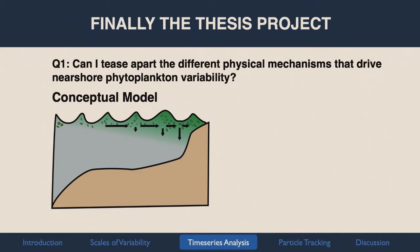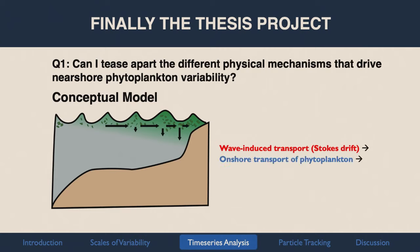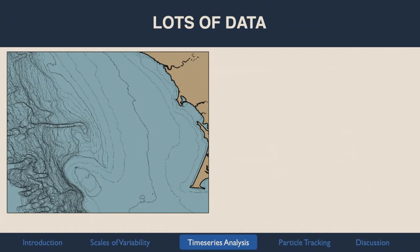Just to reorient with the conceptual model: the arrows represent onshore transport primarily from Stokes Drift or wave-induced transport. As they bunch up on the shoreline they create a convergence zone. This onshore transport of phytoplankton forms a convergent zone that traps things nearshore.